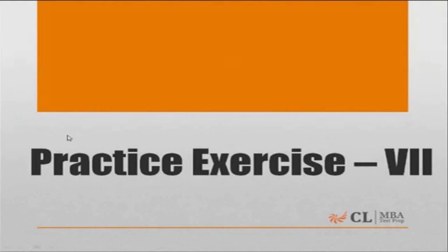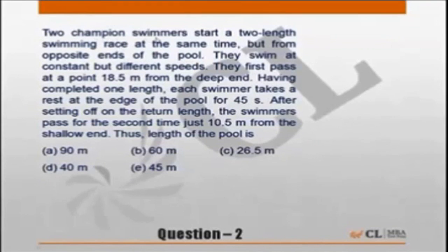Let's look at the question in this exercise. Two champion swimmers start a two-length race at the same time but from opposite ends of the pool. They swim at constant but different speeds.